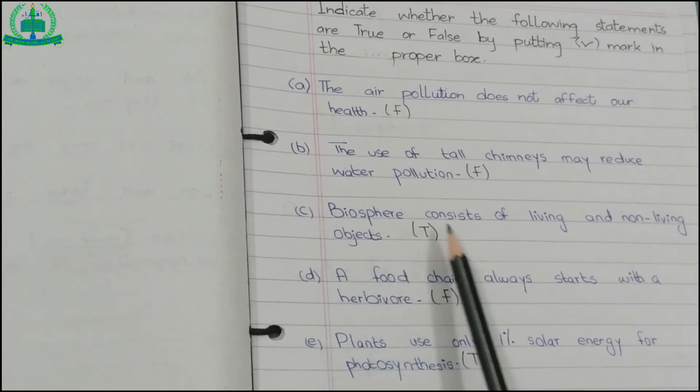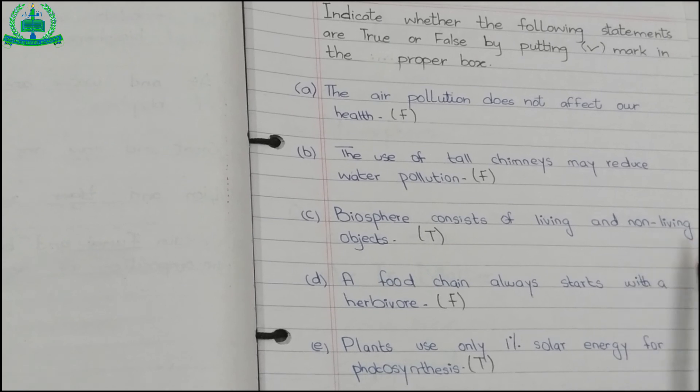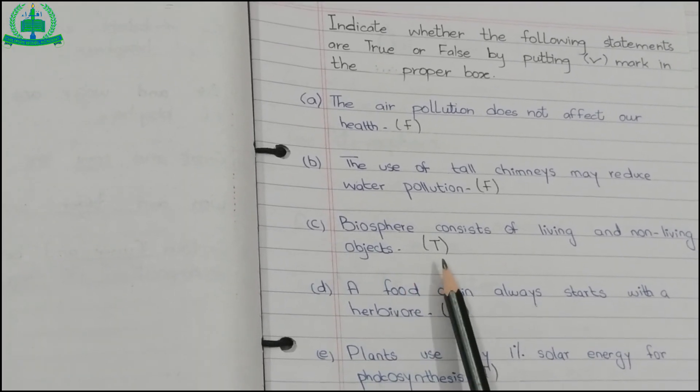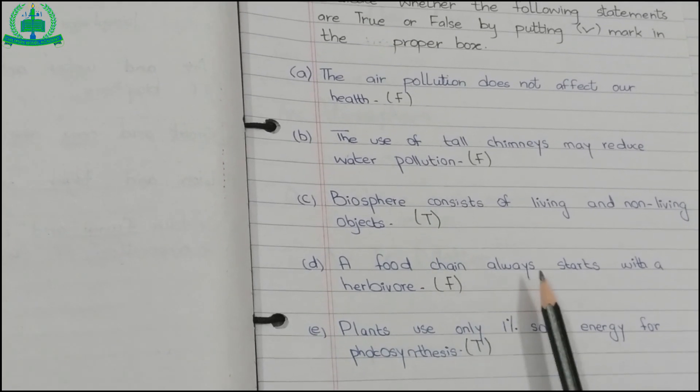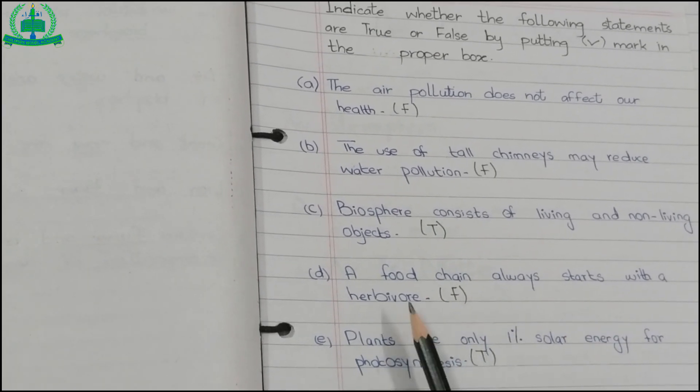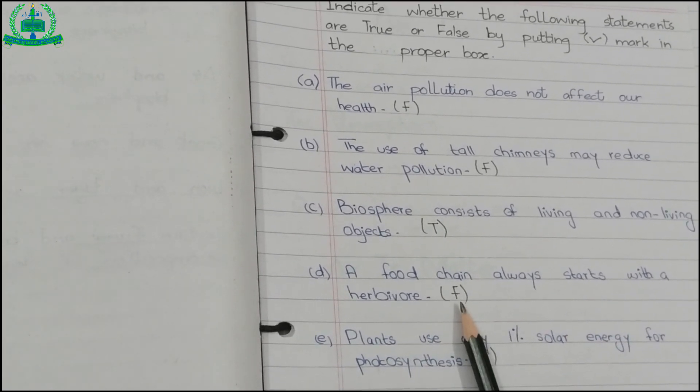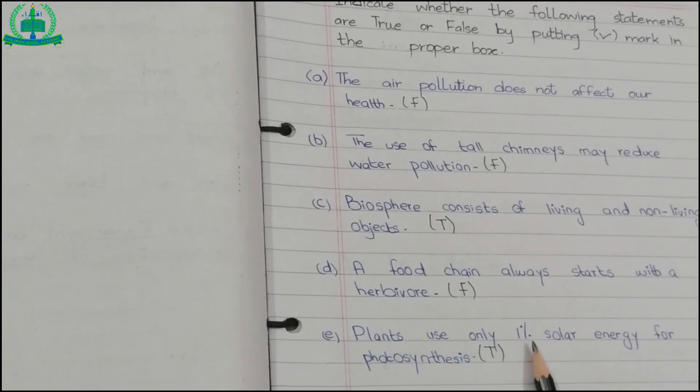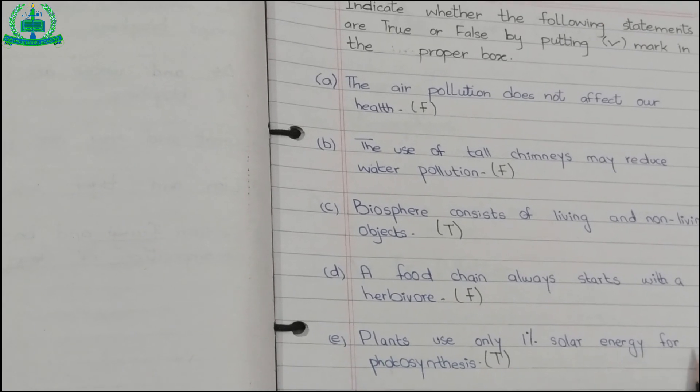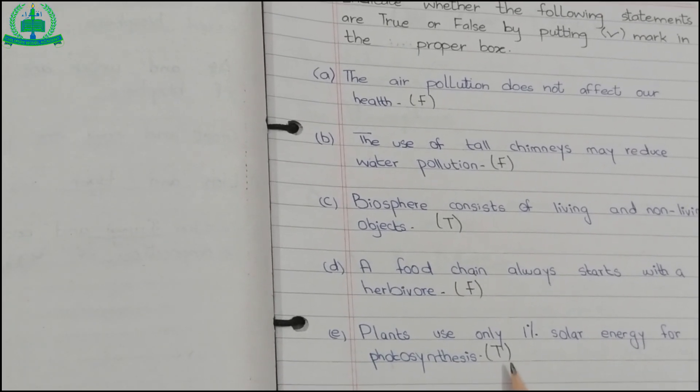C. Biosphere consists of living and nonliving objects. The answer is true. D. A food chain always starts with a herbivore. The answer is false. E. Plants use only 1% solar energy for photosynthesis. The answer is true.